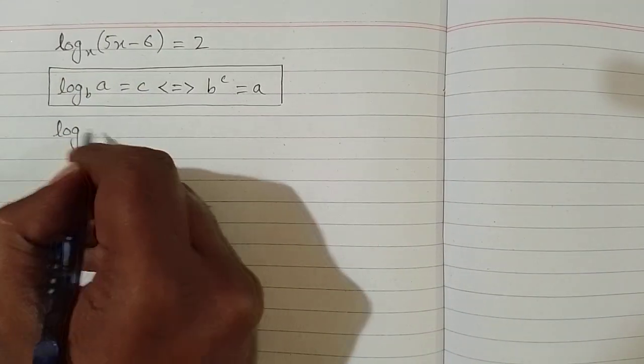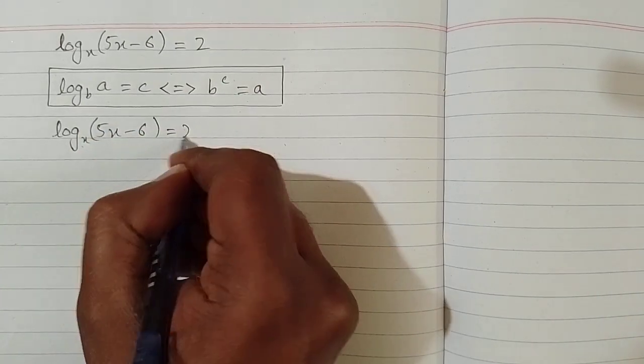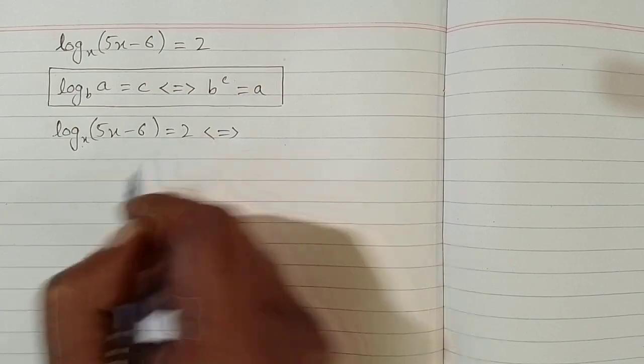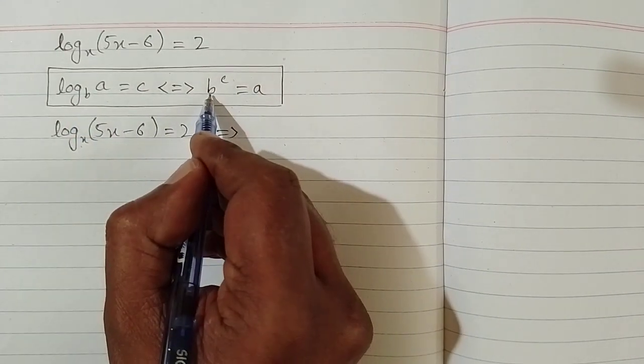So we have log of 5x minus 6 to the base x is equal to 2. So we can see that we have x in place of b, so we will write x over here.